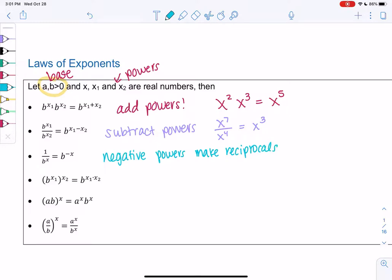The next one is a power to a power. b to the x1 to the x2. In terms of x's, that might be x squared to the fifth power. It's different than the first example. We have a power on a power. So what we can do is we can multiply powers. b to the x1 times x2, both in the power. So x squared to the fifth would be x to the tenth.